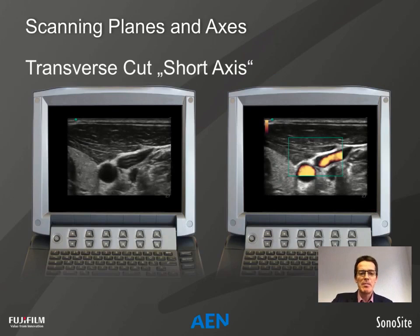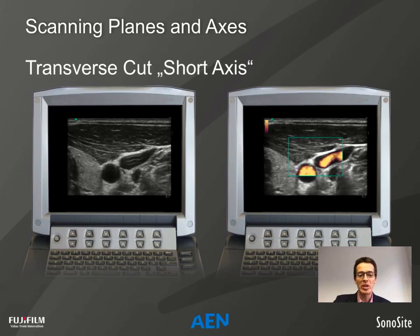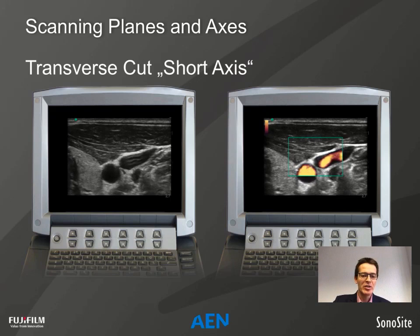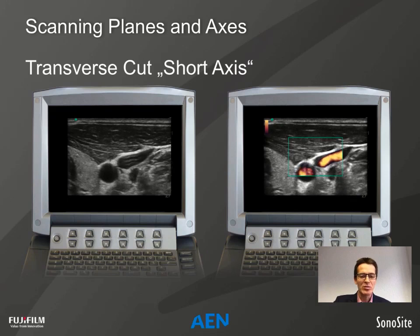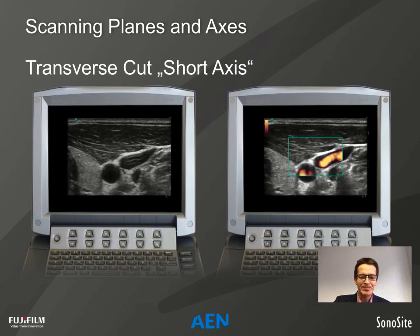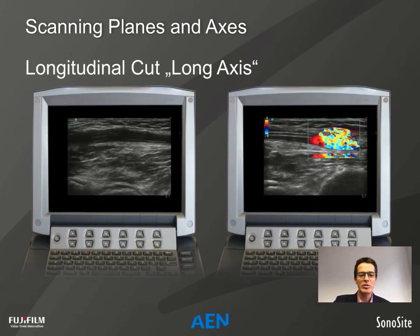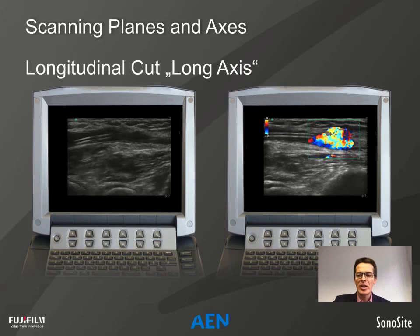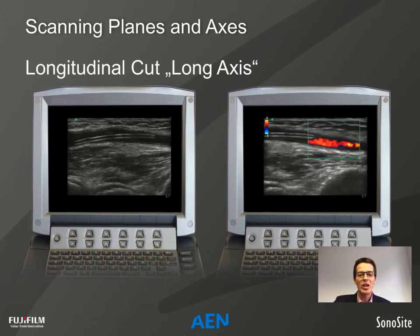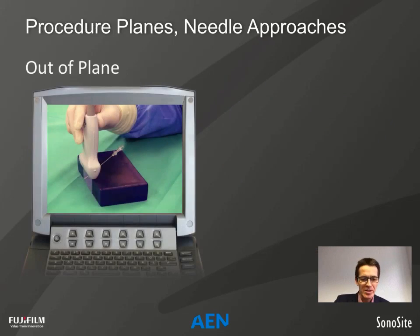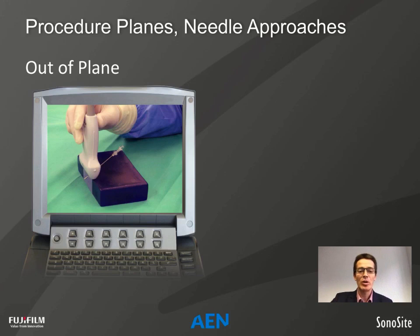To start, we cover some basic information. We look at the lateral neck on these two videos in a transverse cut, also known as short axis. The other term we need is a longitudinal cut or long axis, shown here on a radial artery on the mid forearm. In contrast to this axis terminology — which refers only to anatomy — we also talk about planes, which refer to needle guidance in relation to the scanning plane, not to anatomy.